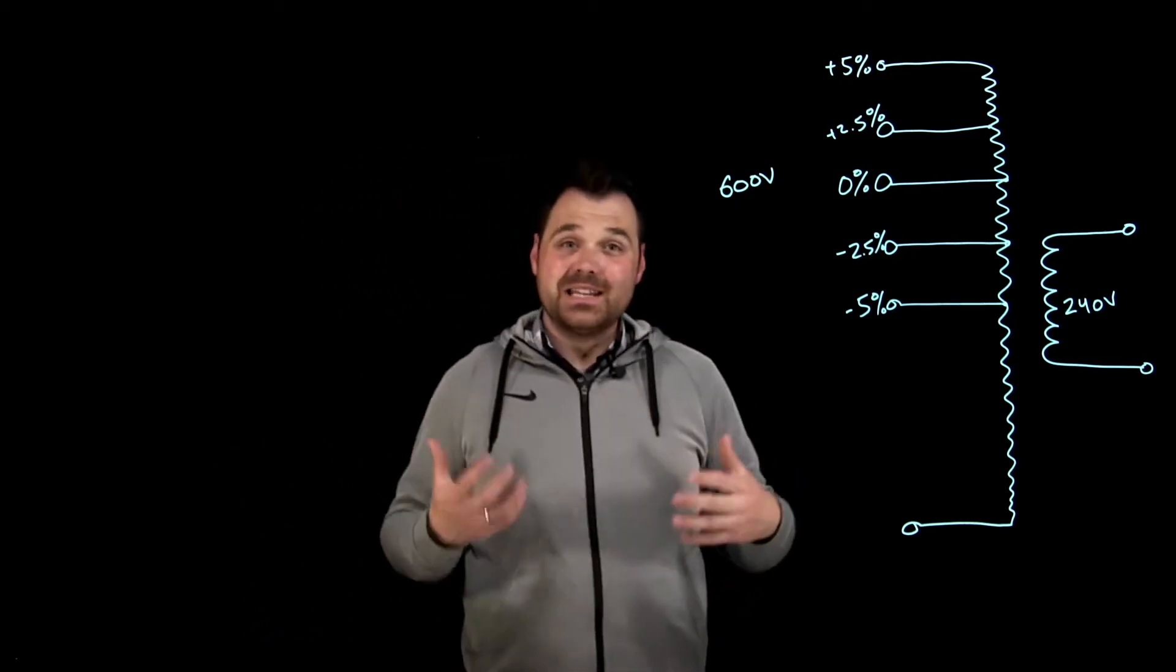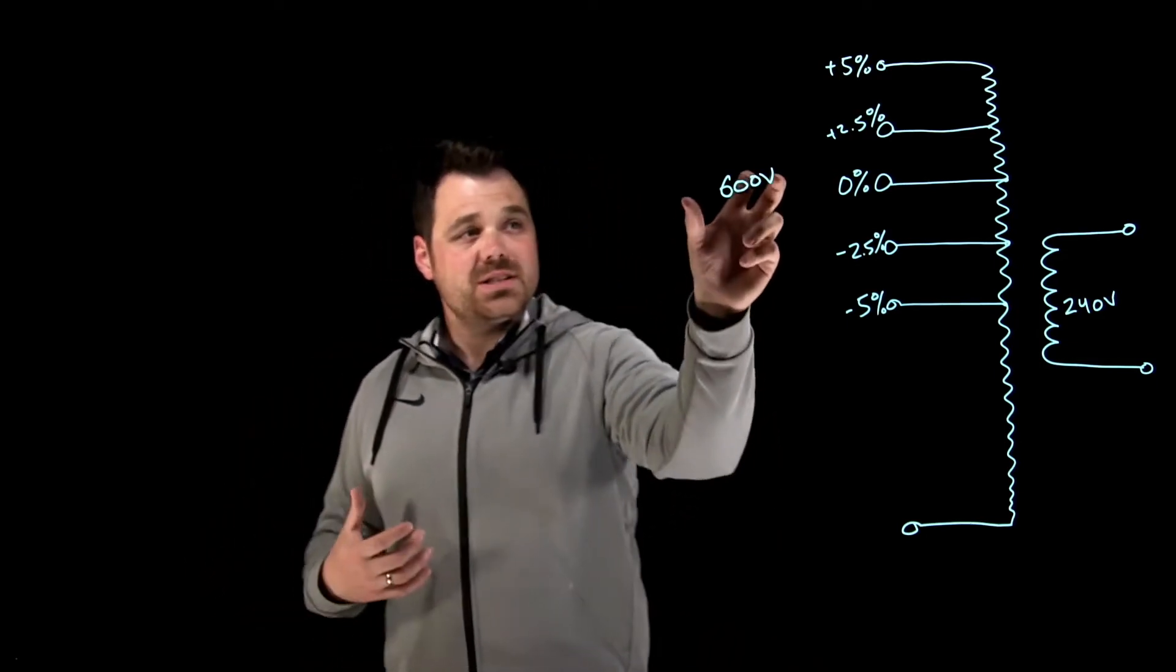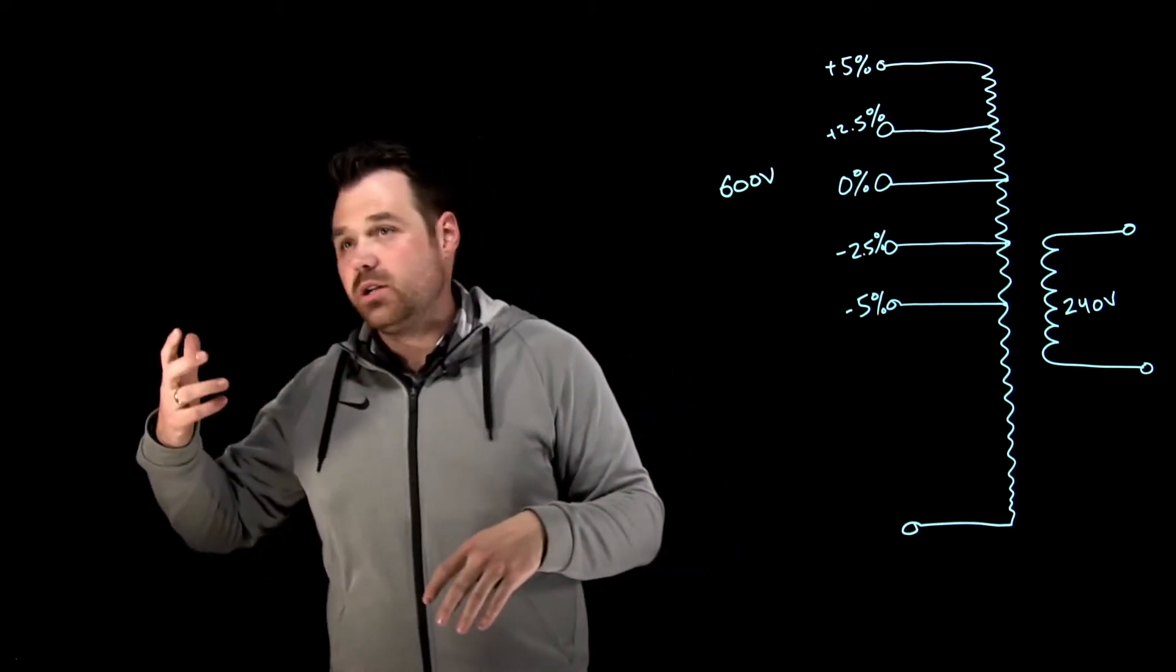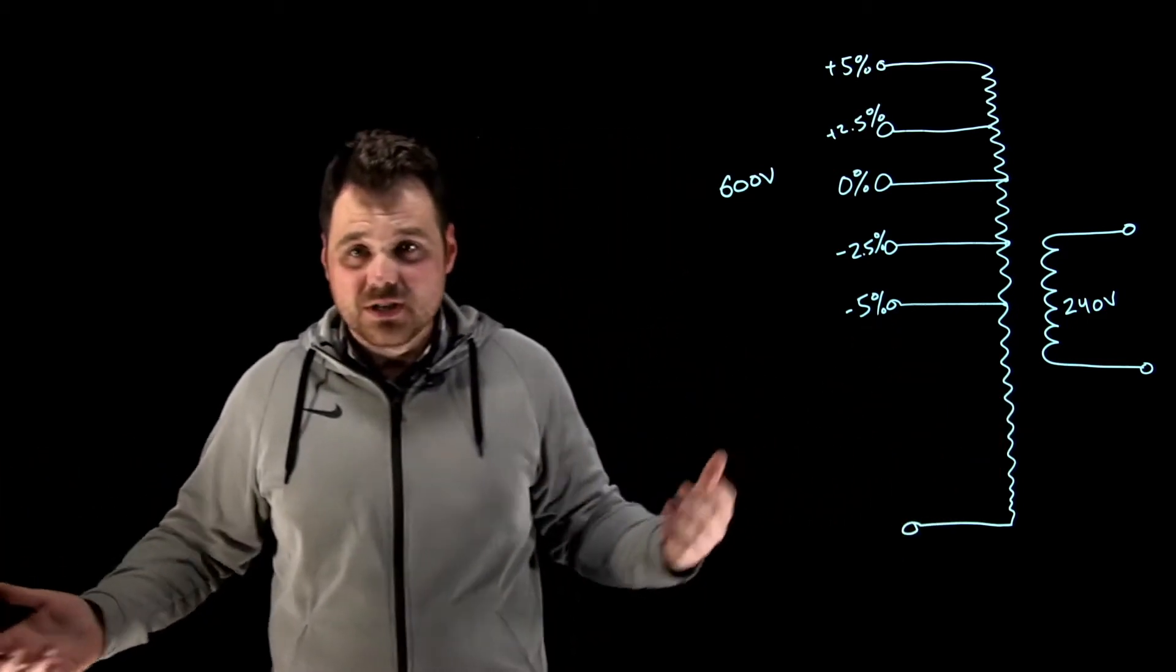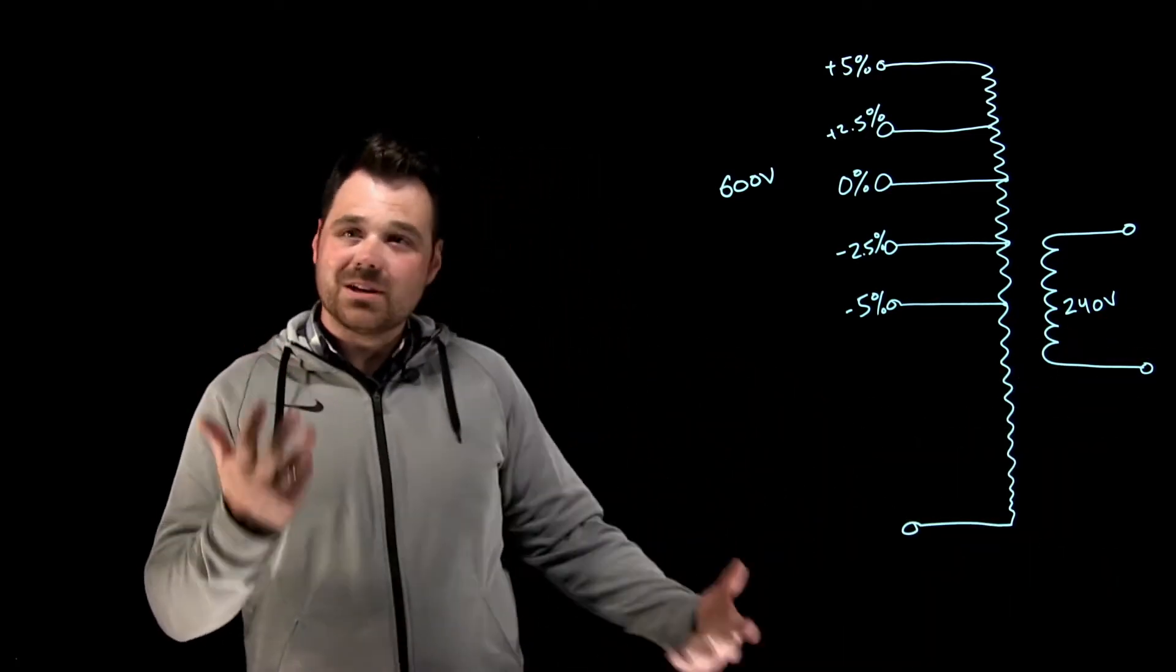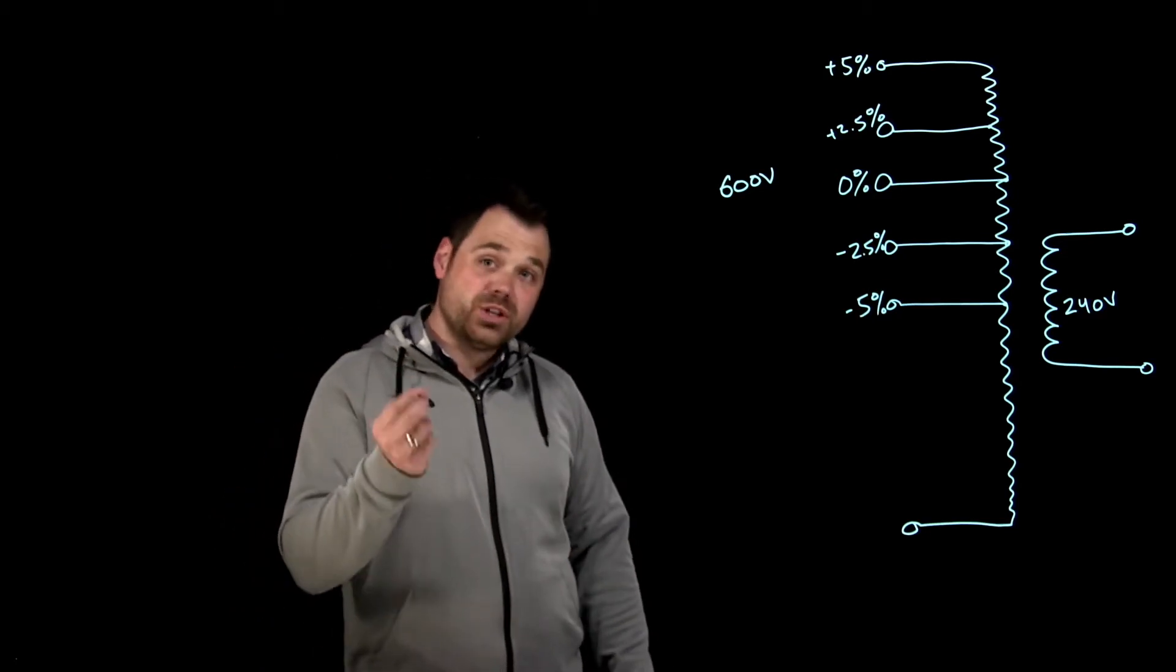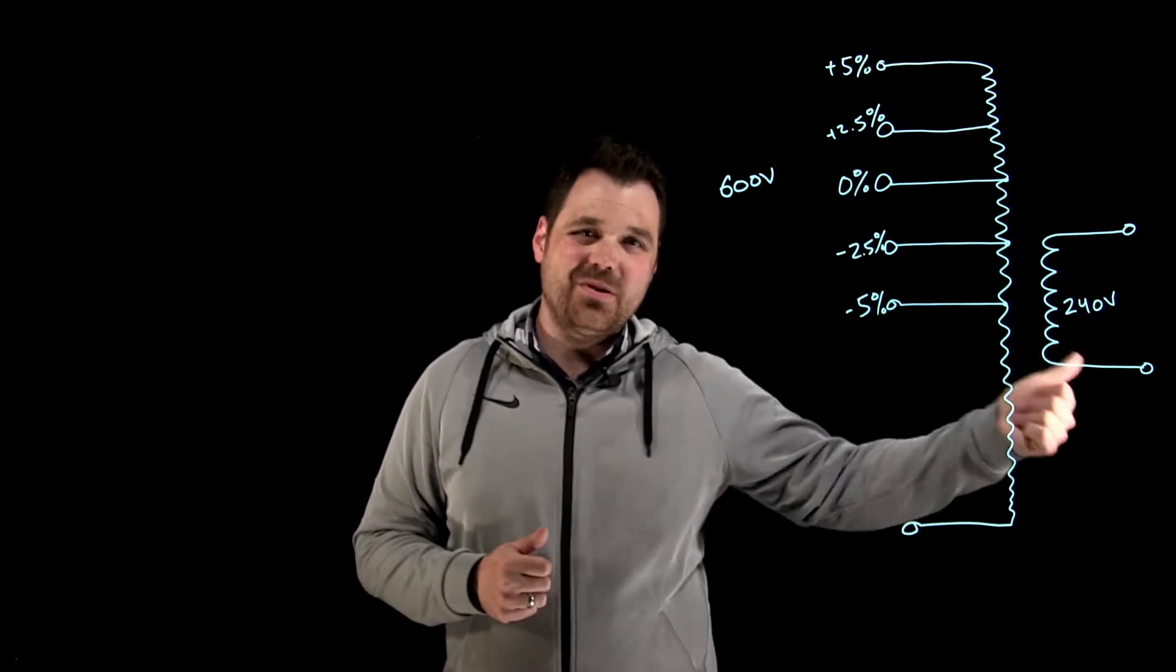Well, they are there in case my primary voltage isn't quite right. So this is a 600 volt primary. What if I only had 570 volts? What if I had 620 volts? If your primary voltage isn't right, your secondary voltage isn't right. So some transformers have these primary voltage taps, so that we can adjust the voltage on the primary, so that we still get our rated secondary voltage.